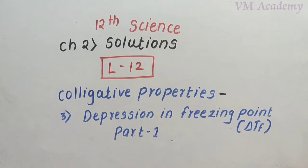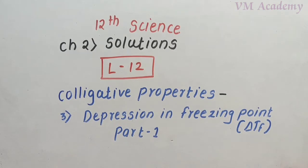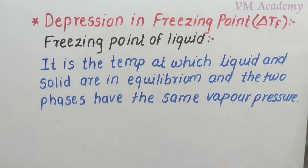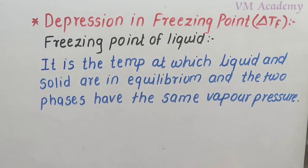Today in Part 1, we will see what this property is, explain it with a diagram, and derive the expressions and formulas. So let's start — colligative property: depression in freezing point. Today's lecture: depression in freezing point, the third colligative property. The previous two we have already covered.